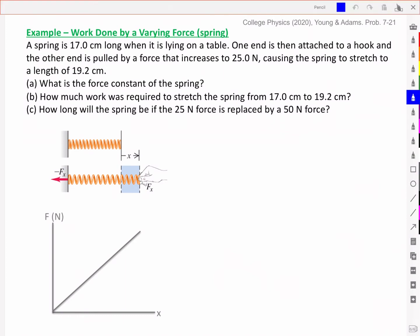So we are told that the spring is originally 17.0 cm long. So that is its equilibrium position. And it is then stretched to a length of 19.2 cm. This corresponds to a delta x of 2.2 cm. So relative to an equilibrium position we would call this zero and this 2.2 cm. So it took a force of 25 newtons to extend it to a position of 2.2 cm.